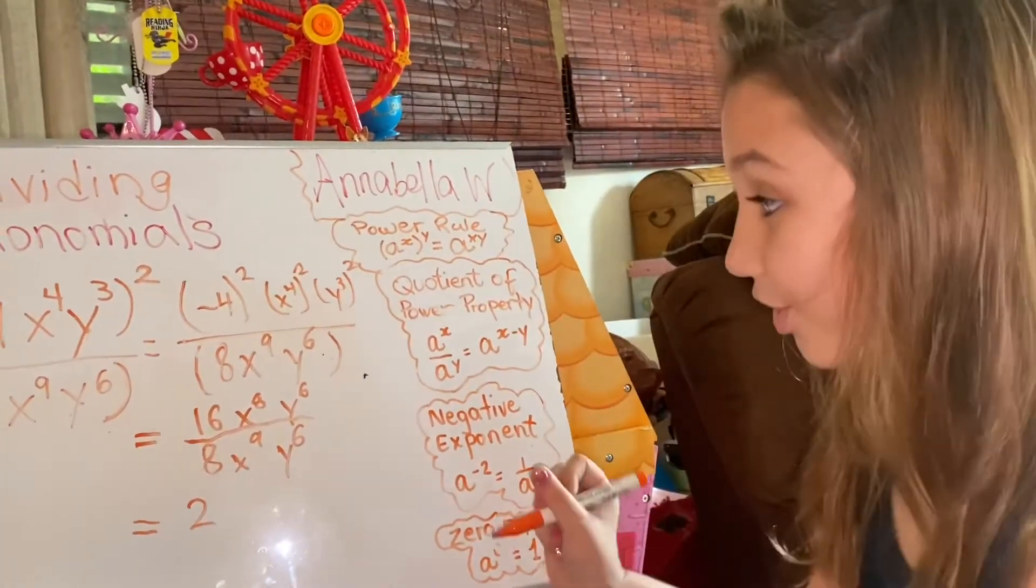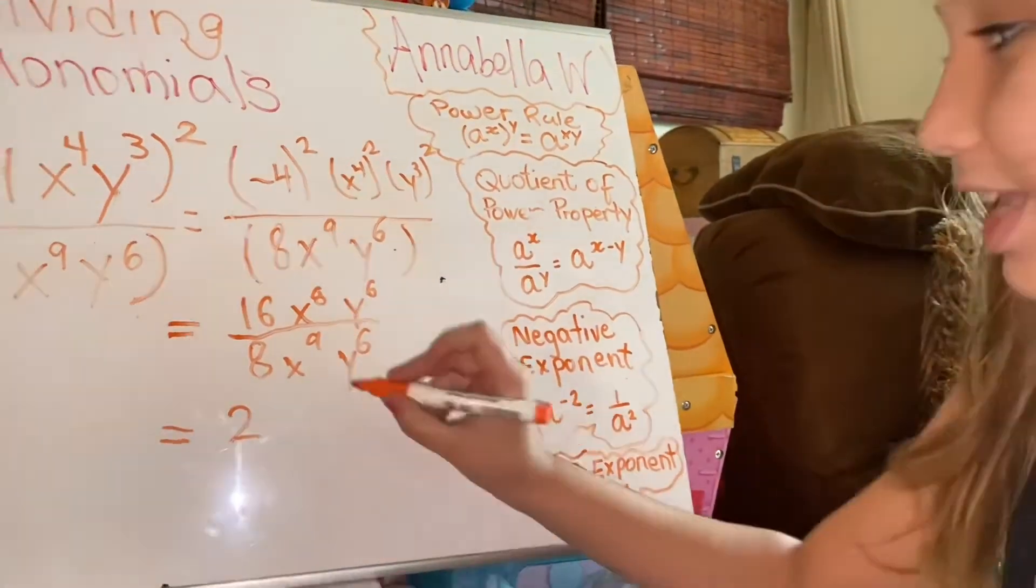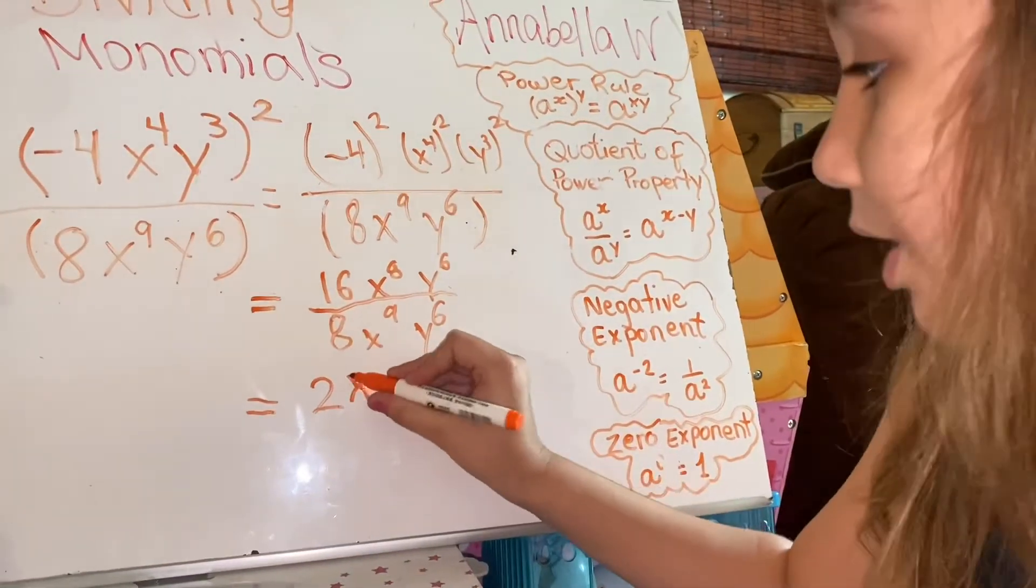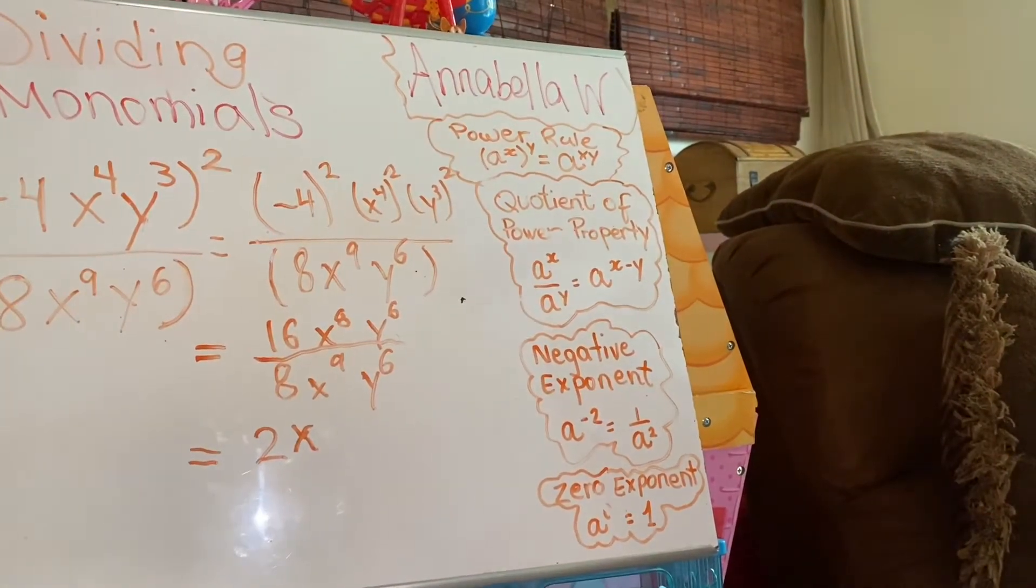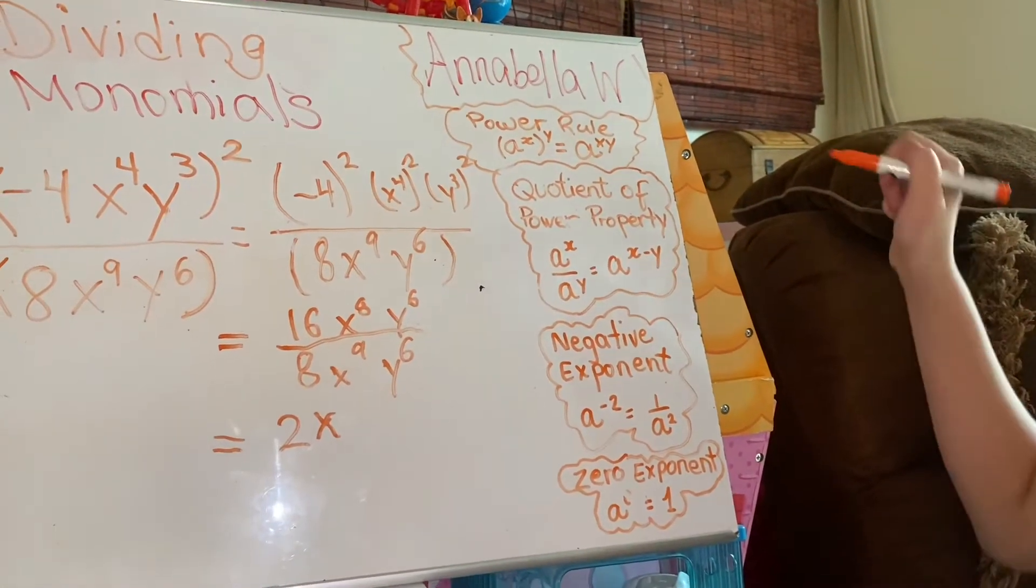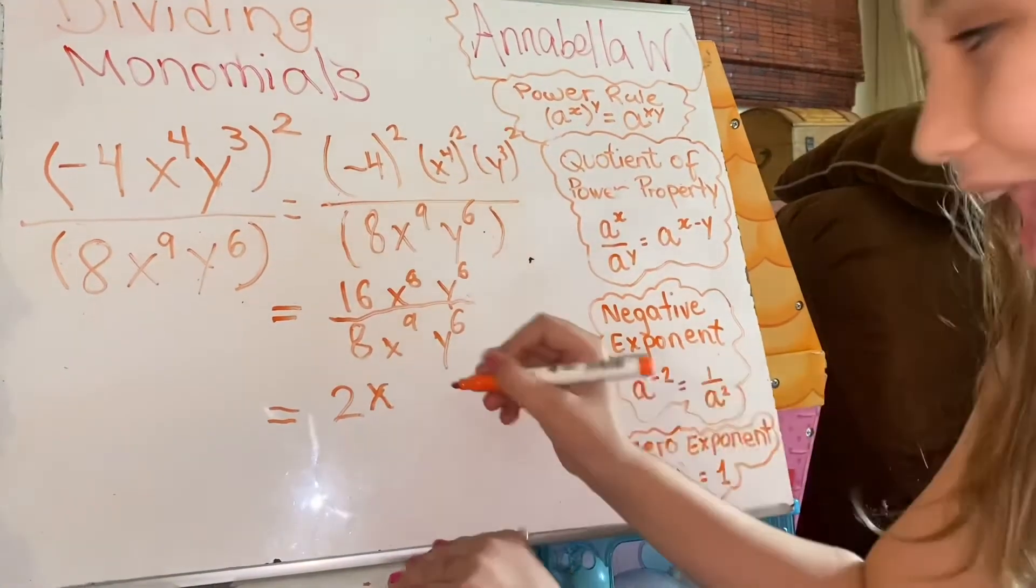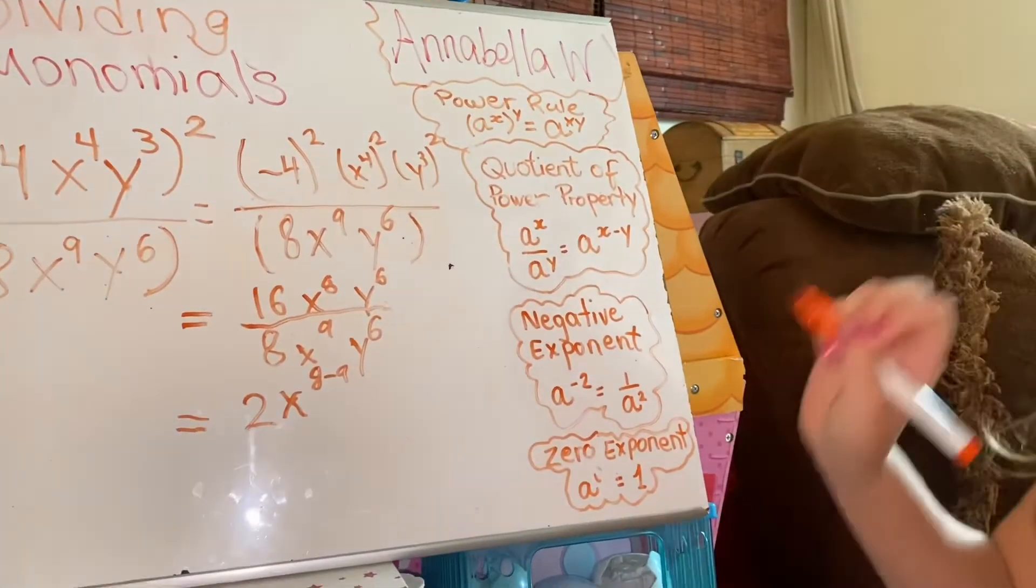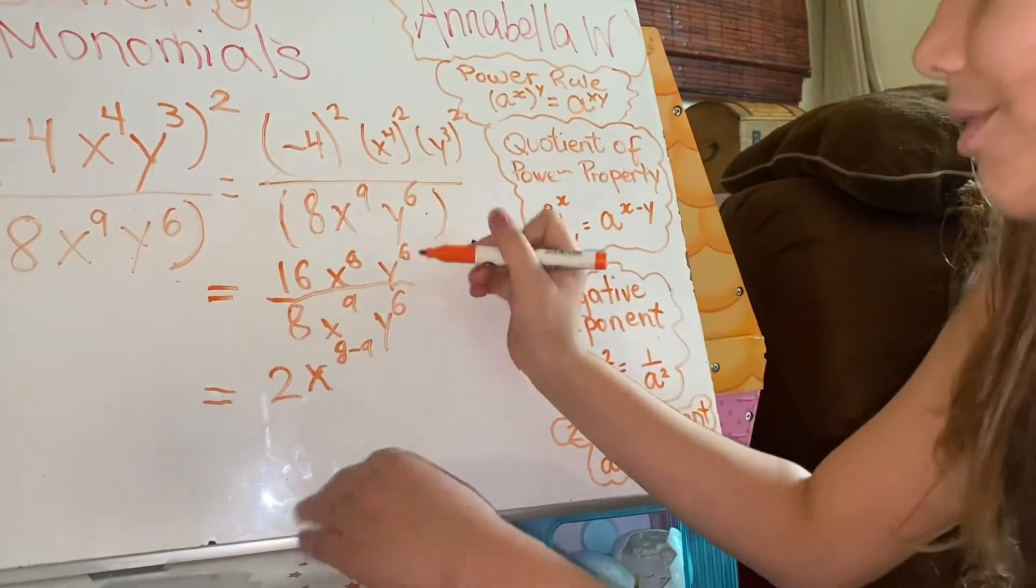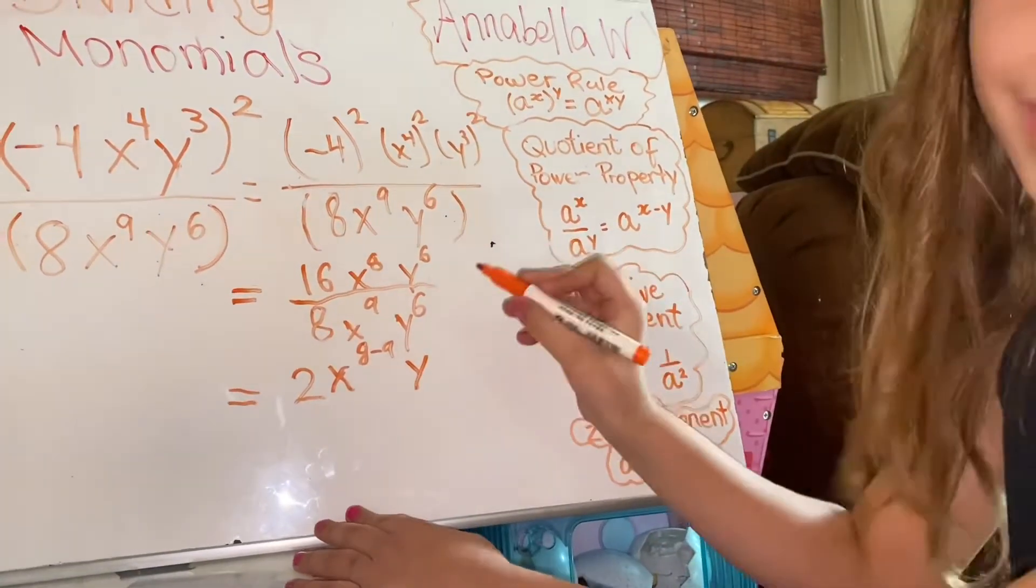16 divided by 8 equals 2. Now look, we have the same base, x. So we're going to keep it x. But what do we do with the exponents? Well, we subtract 8 minus 9. The same thing applies with y. Keep the y. 6 minus 6.